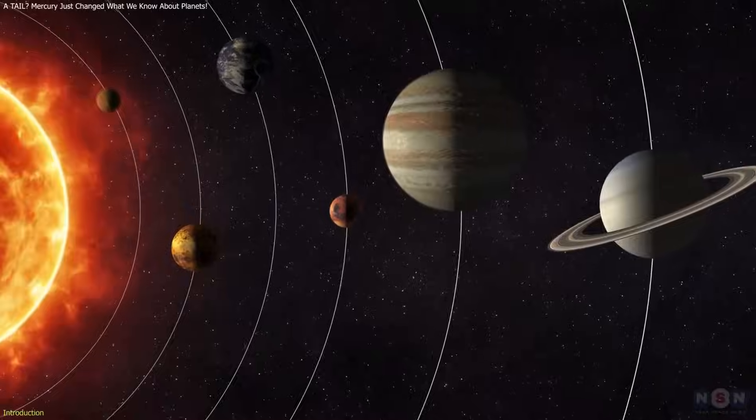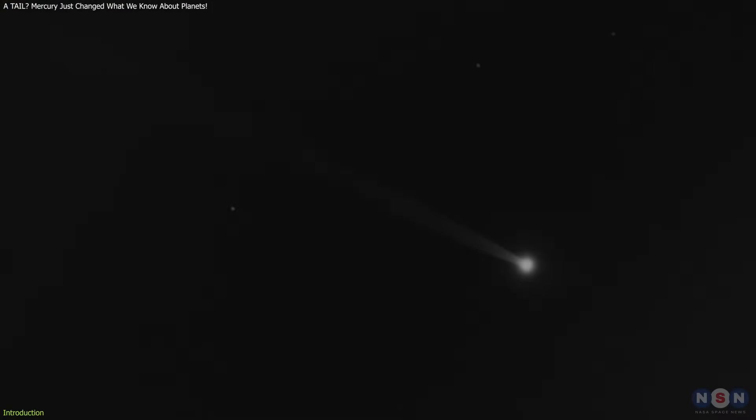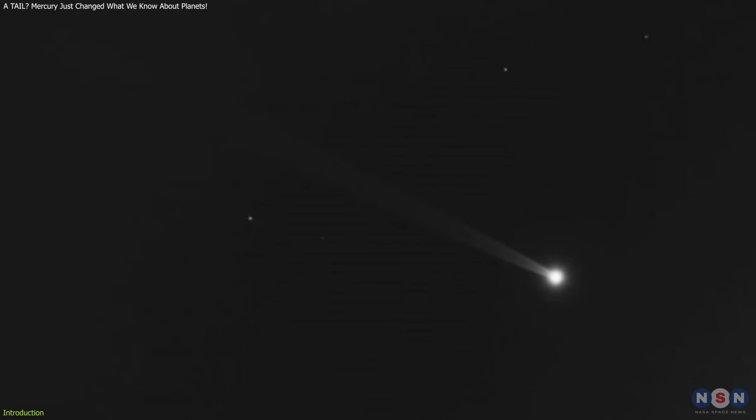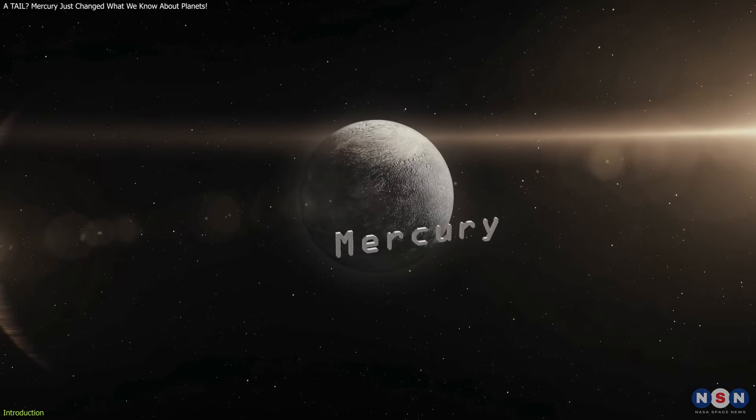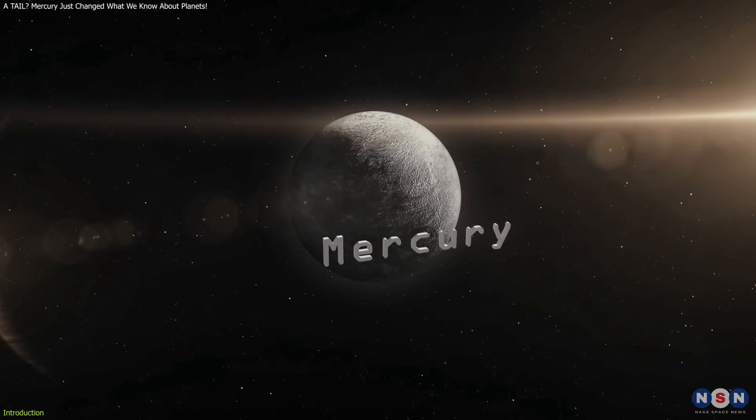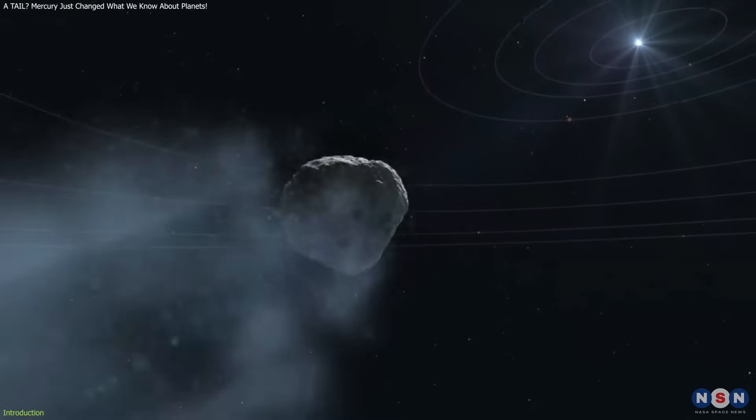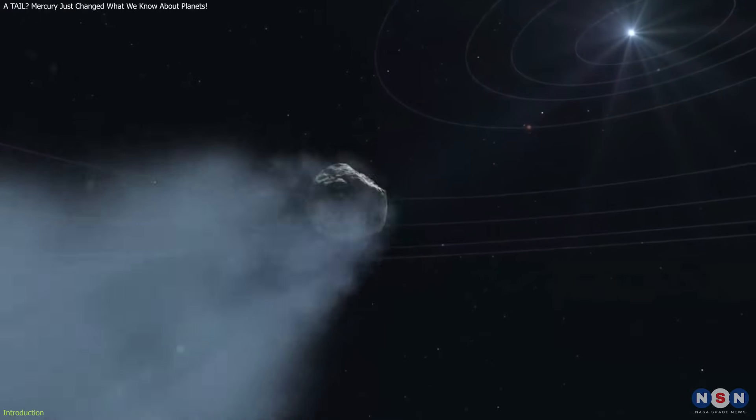Astronomers have discovered that the closest planet to the Sun is actively releasing material into space, forming a massive tail that stretches for millions of kilometers behind it. That's right, Mercury, a rocky planet with no atmosphere to speak of, is shedding sodium into the solar system like a comet.